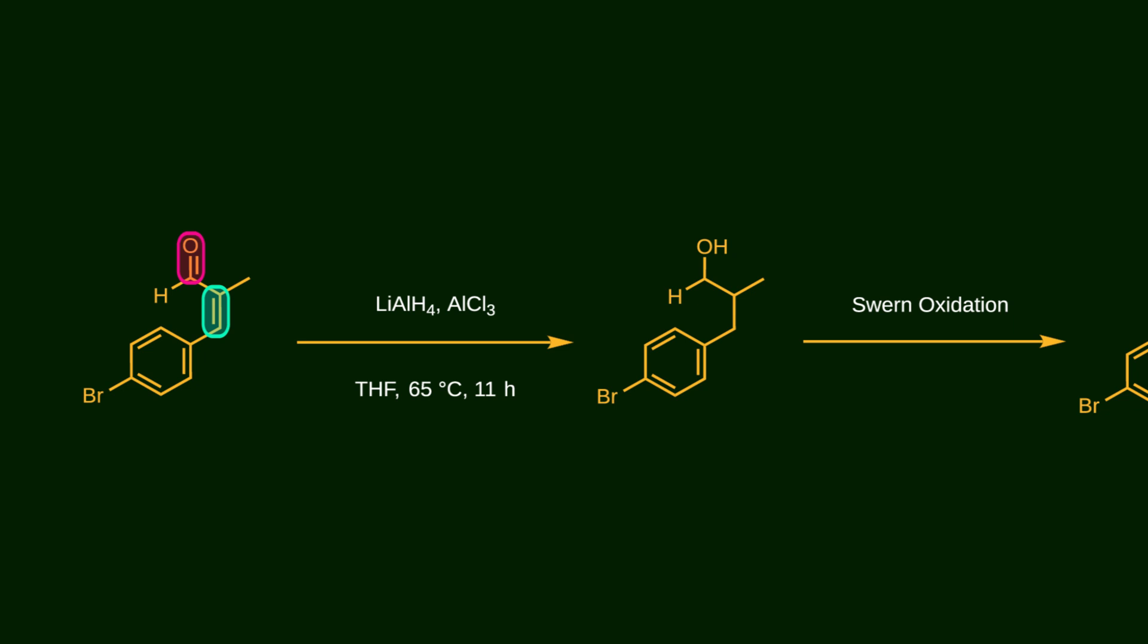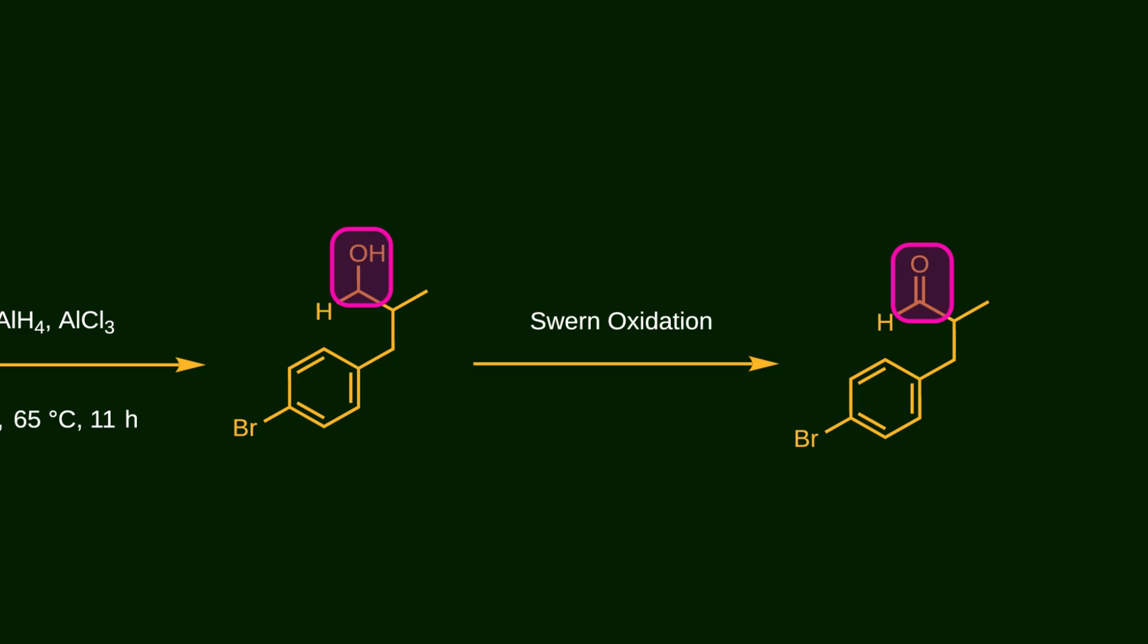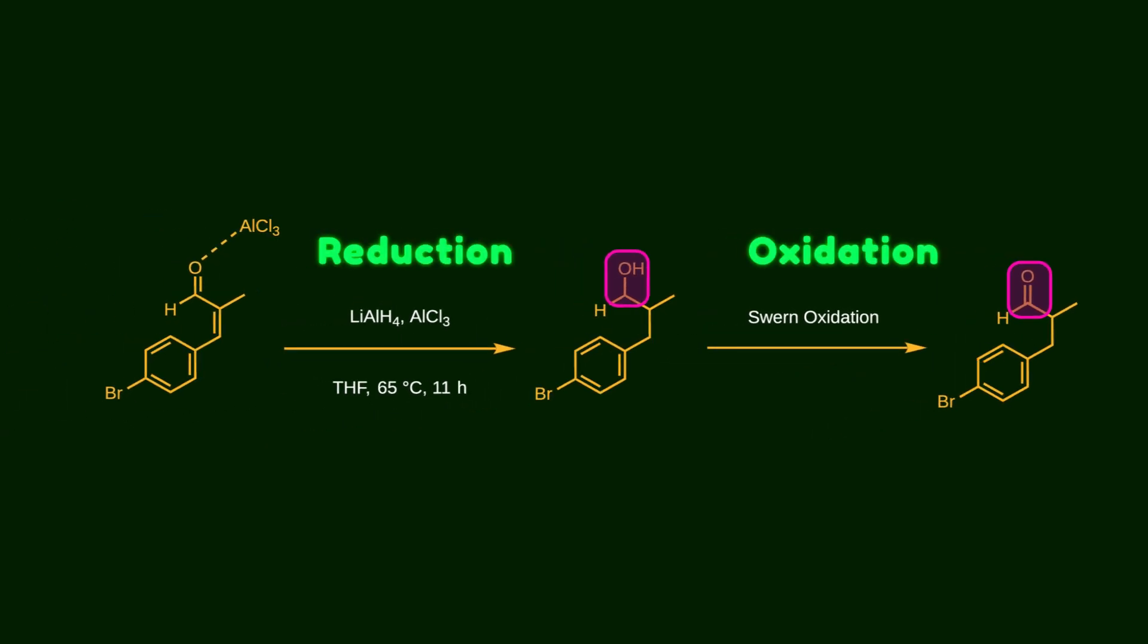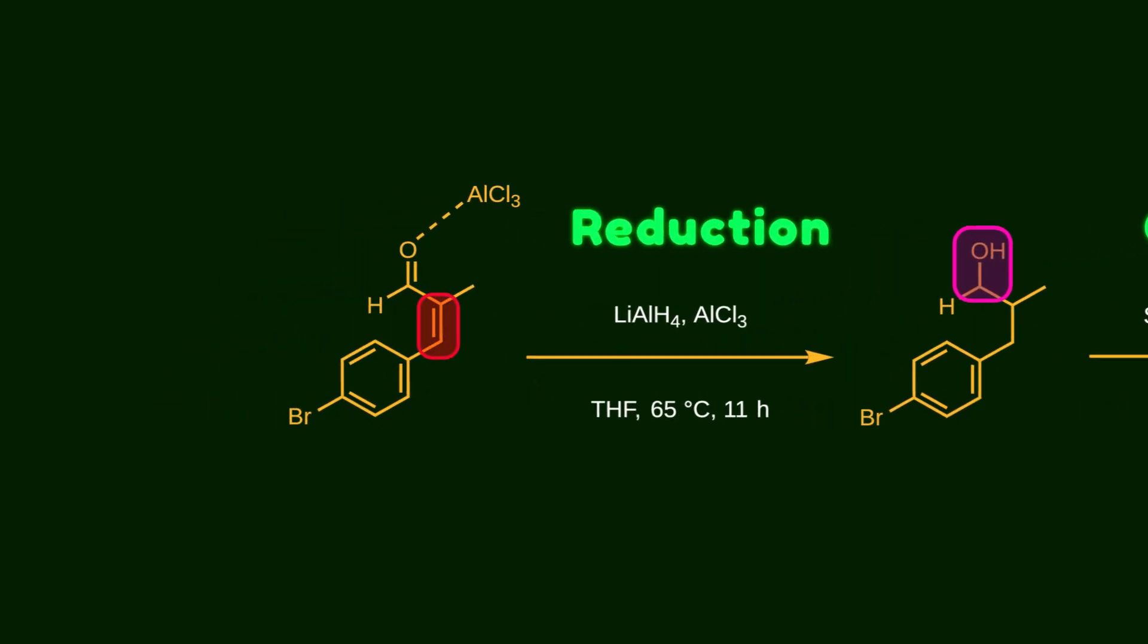Lithium aluminum hydride is strong enough to reduce both. In fact, aluminum chloride helps by increasing the electrophilicity of the carbonyl. It binds to the oxygen atom, making the whole conjugated system easier to reduce. After that, the resulting alcohol is oxidized using Swern protocol to produce an aldehyde. This reduction-oxidation sequence is used because there is no good reagent that can selectively reduce only the double bond.